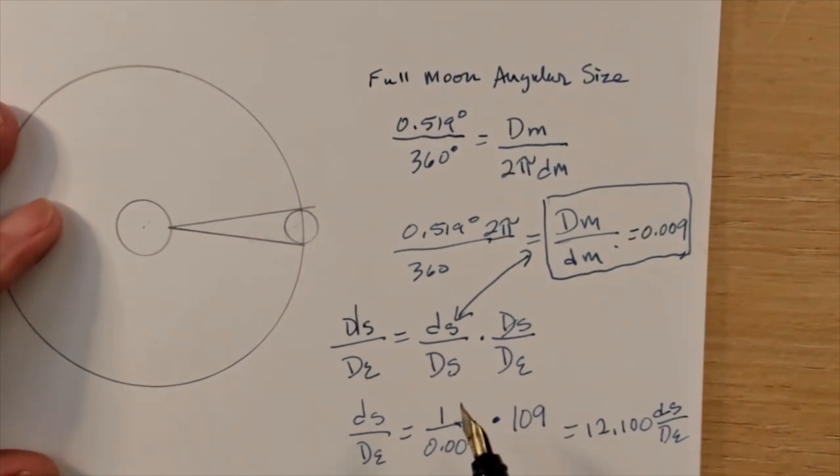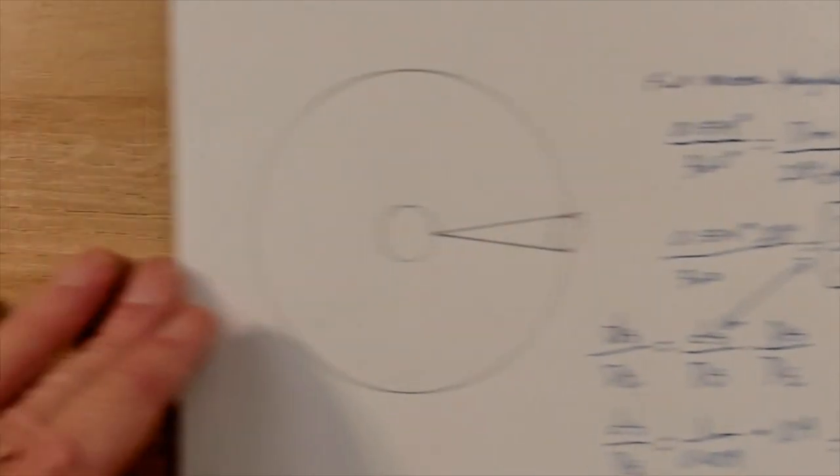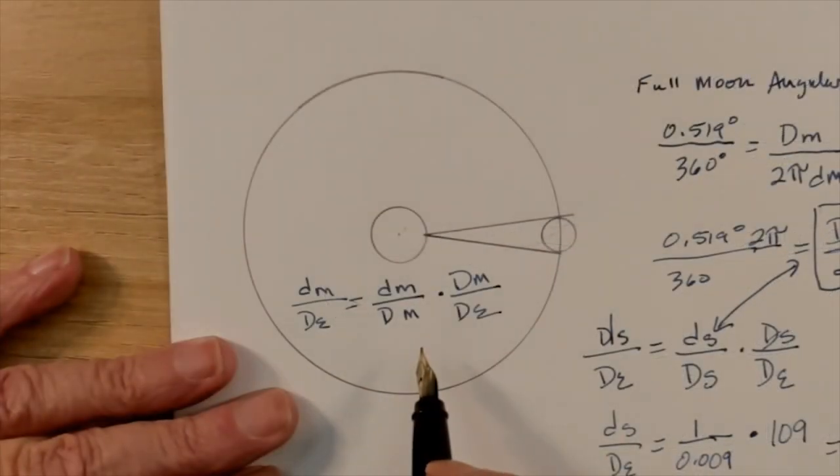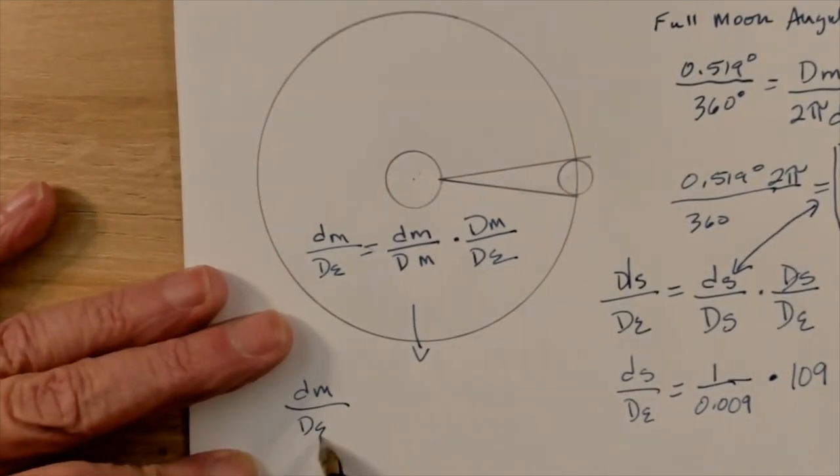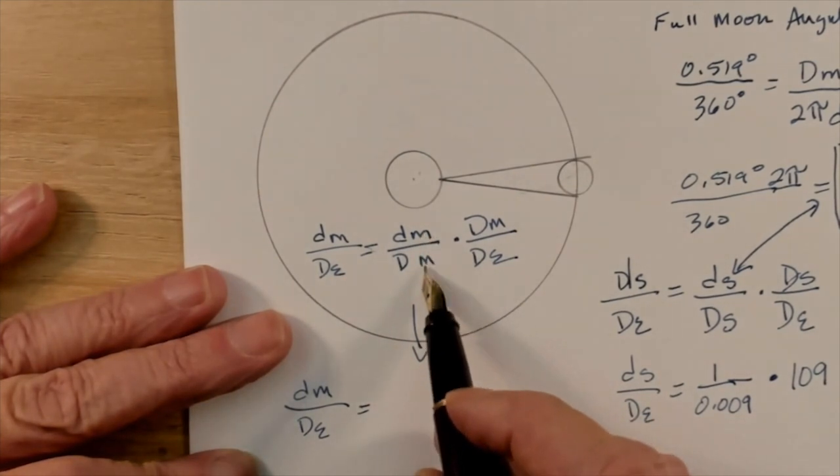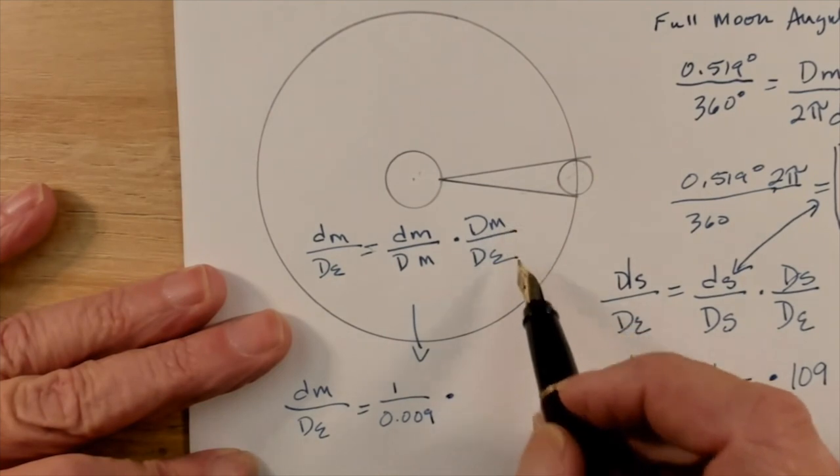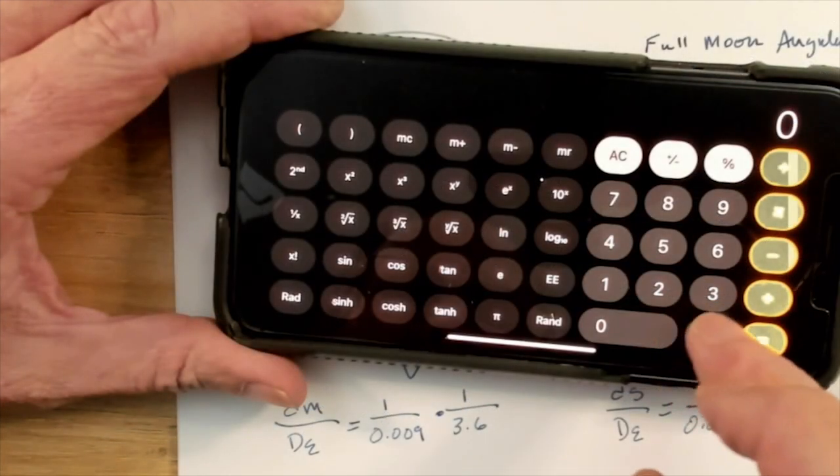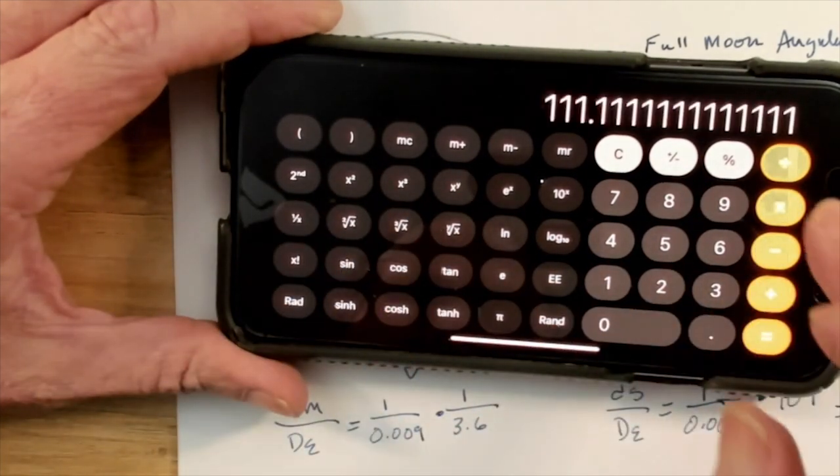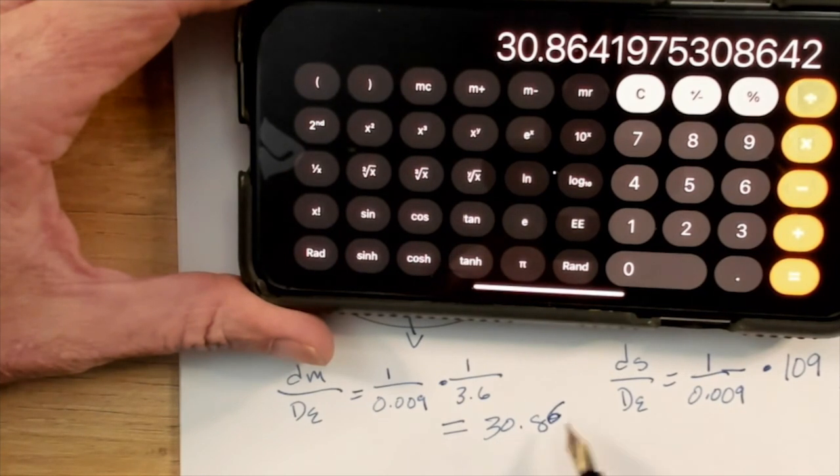Now we can use this same trick to figure out the distance from the earth to the moon. All we have to do is exchange the diameters of the sun for diameters of the moon. The distance to the moon over the diameter of earth equals the distance to the moon over the diameter of the moon, which is 1 over 0.009 times the diameter of the moon over the diameter of the earth. And as you recall, the earth is 3.6 times the diameter of the moon. So the distance from the earth to the moon is about 30.86 earth diameters.